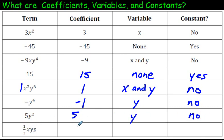The next one. Coefficient is 1 third. Yes, it can be a fraction. The variable. x and y and z. Sorry for the mess. And the answer is no to it being a constant.